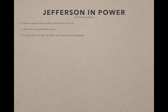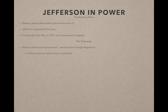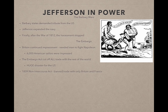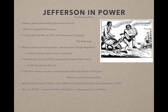Britain continued impressing American sailors — about 6,000 during this period — needing men to fight Napoleon in Europe. Jefferson responded with the Embargo Act, which cut off all trade with the rest of the world — a huge economic disaster. Two years later, the Non-Intercourse Act banned trade specifically with Britain and France and reopened trade with the rest of the world, but it still hurt significantly since Britain and France were such powerful players in commerce. Madison easily became the next president in 1808 and faced pressure for war.